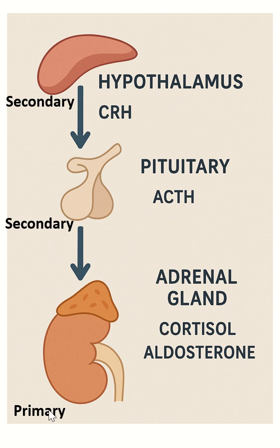In primary adrenal insufficiency, the problem is in the adrenal gland. In secondary adrenal insufficiency, the problem is with ACTH — because ACTH is not being produced from the pituitary gland, ACTH will not be stimulating the adrenal gland. So the adrenal gland does not have any stimulus for the production of these hormones.